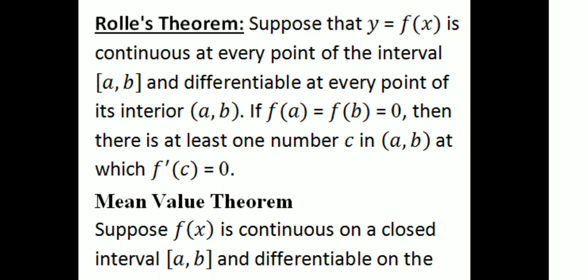Suppose that y = f(x) is continuous at every point on the closed interval [a, b] and differentiable at every point on the open interval (a, b). If f(a) = f(b) = 0, then there is at least one point c in (a, b) at which f'(c) = 0.